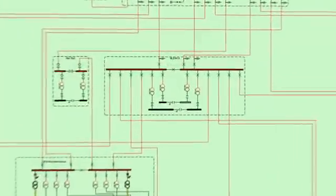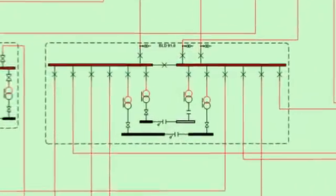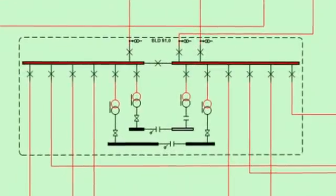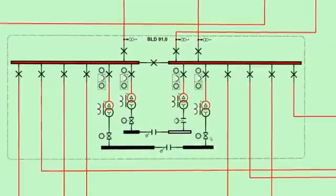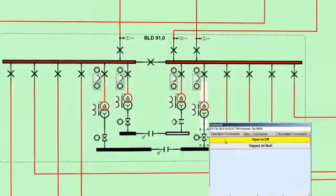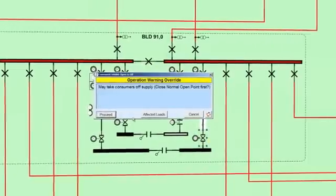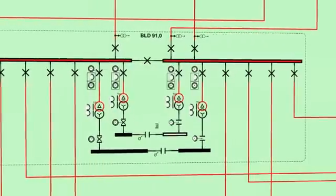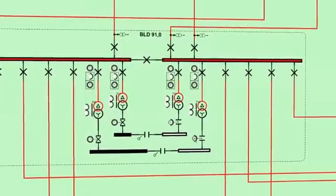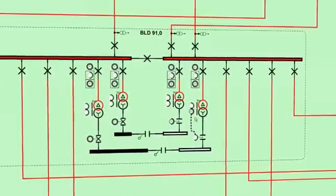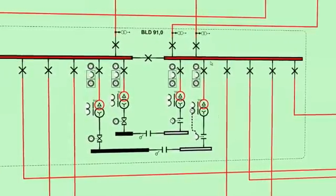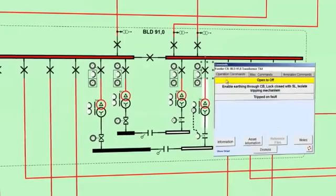An important part of this functionality is support for simple network behaviour modelling, including circuit breaker tripping responses, electrical state indication, interlocks, automation and Castell key interlocking systems.